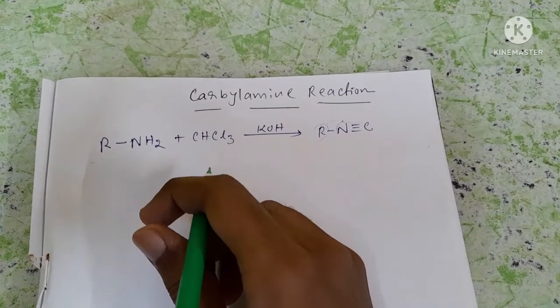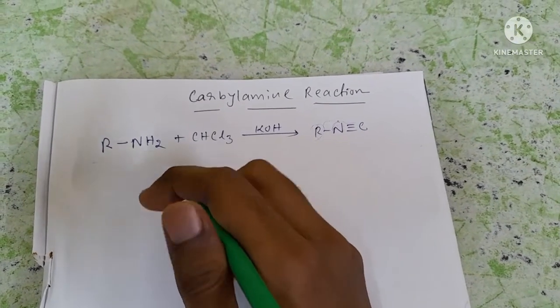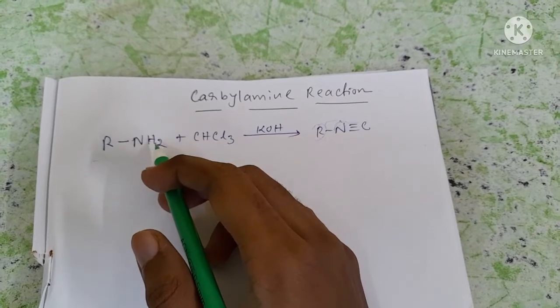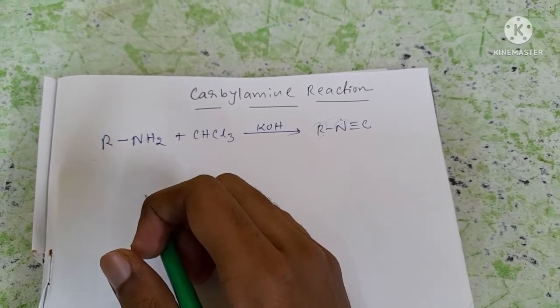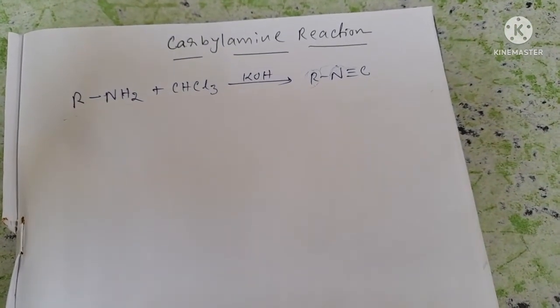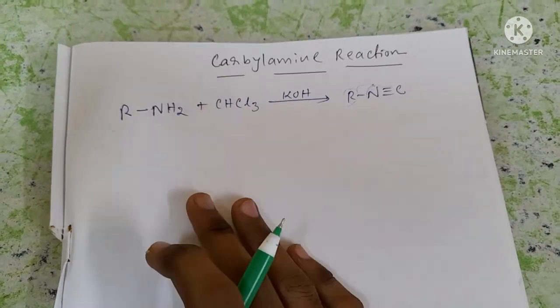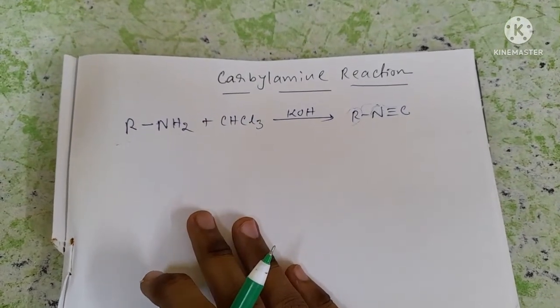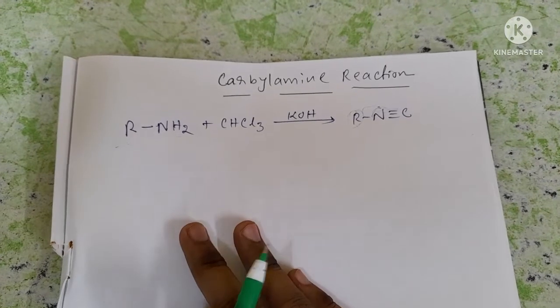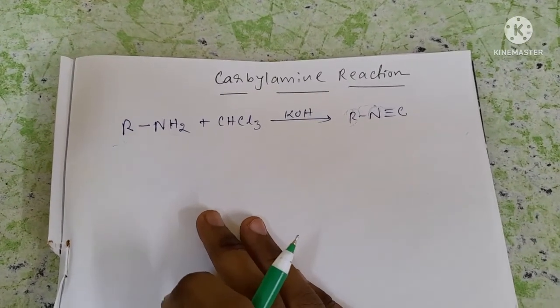Primary amine can undergo this reaction because there are two active hydrogens present. This is a method of distinction. We can easily distinguish between primary, secondary, and tertiary amines through this chemical test, the carbylamine reaction.